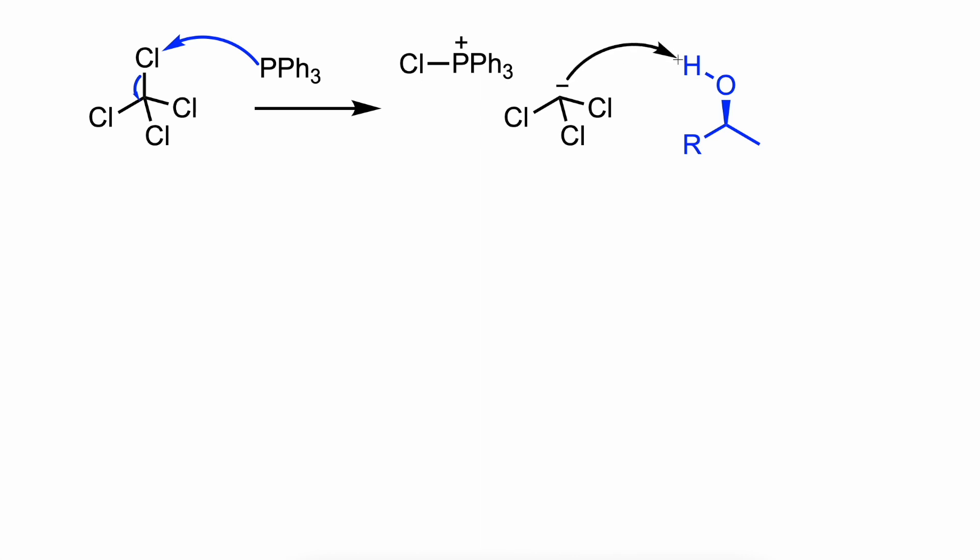Subsequently, the protonation of the alcohol yields chloroform and an alkoxide derivative.